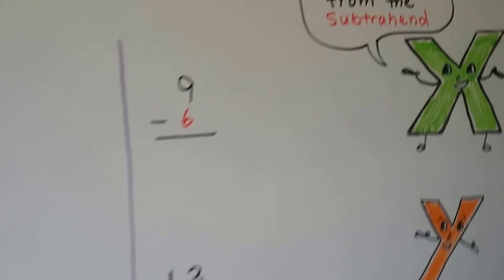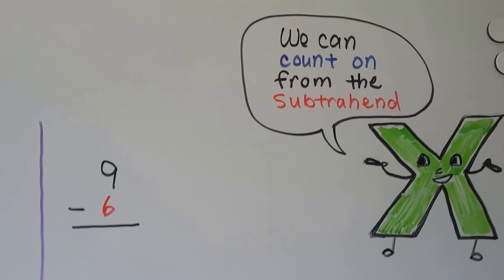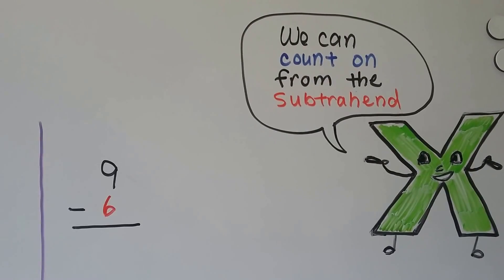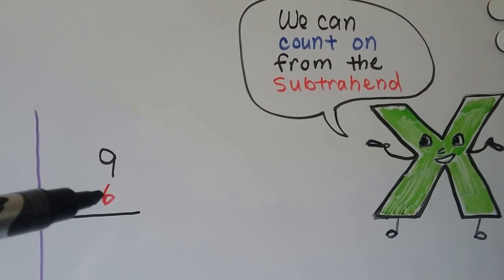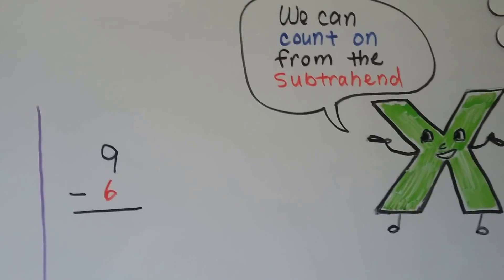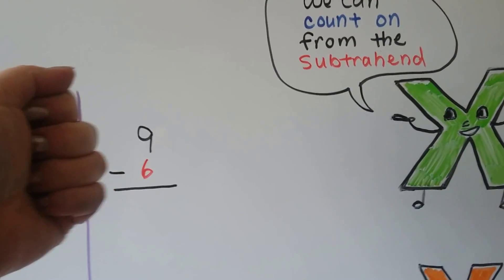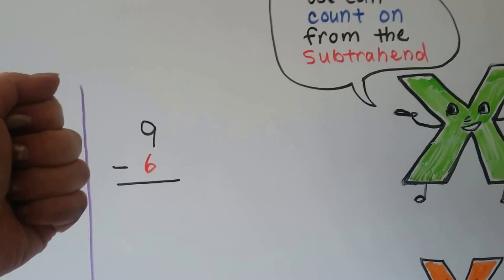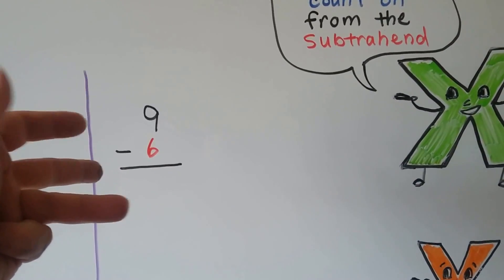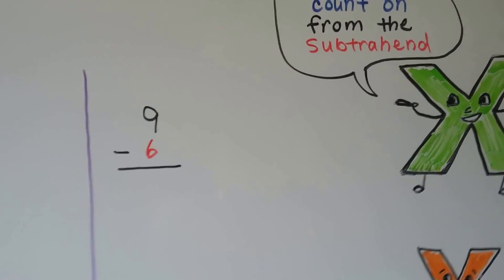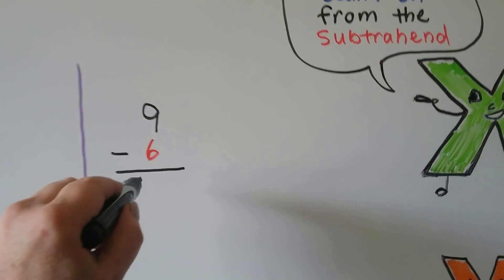We can count on from the subtrahend to find a missing difference. If we have 9 minus 6, we start with the 6 and count up to the 9: 6, 7, 8, 9. That's 3. So 9 minus 6 is equal to 3.